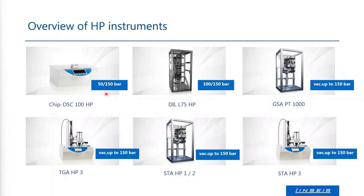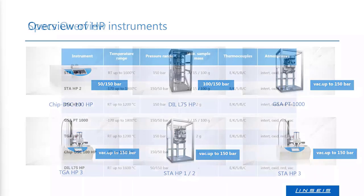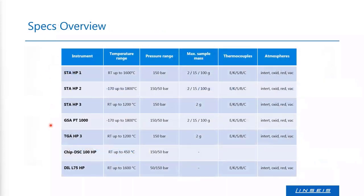We have high-pressure systems which can apply up to 150 bar simultaneously with high temperature — for example, 1600 degrees Celsius and 150 bar at the same time. An overview of our instrument types is given here, and you can also find this information, specifications, and brochures on our website, linseis.com.